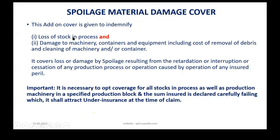The rates are different — for loss of stock it is 2.5 times the tariff rate, and for machinery it is 5 times. That is why underwriters are under the impression that we can choose either of these two. But if you do that, you will be saving premium but ultimately paying heavily for under-insurance. The sum insured must represent 100% stock in process and 100% plant and machinery, containers, equipment, including cost of removal of debris and cleaning of machinery.